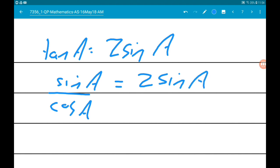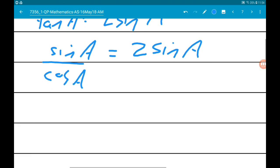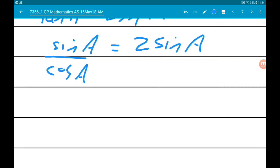So sine A over cosine A is equal to 2 sine A. At this point, it might be tempting to divide by sine A. Never do that, because we will lose a solution. And also, sine A can equal 0. Dividing by 0 is illegal. So, let's multiply by cos of A. So we get sine of A is 2 sine A cos of A.